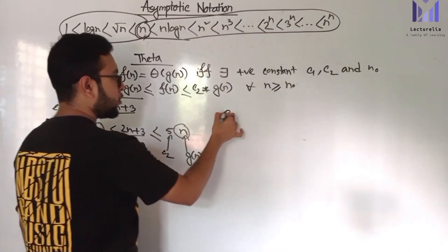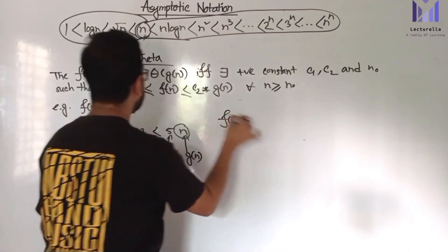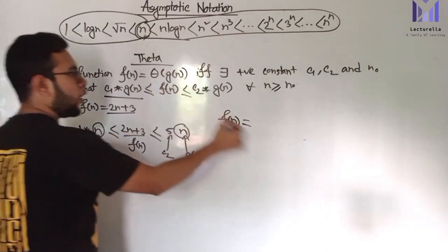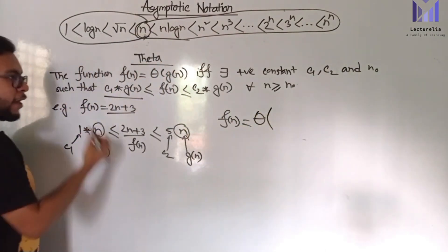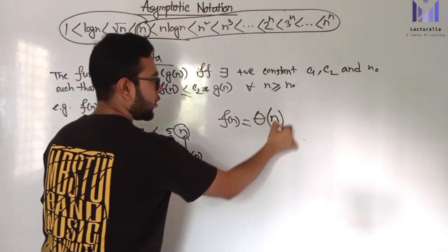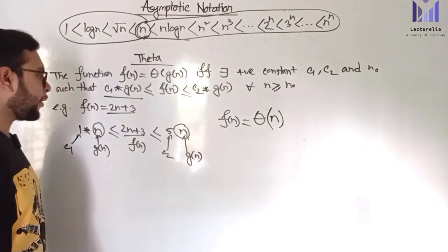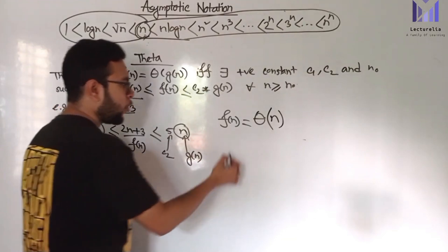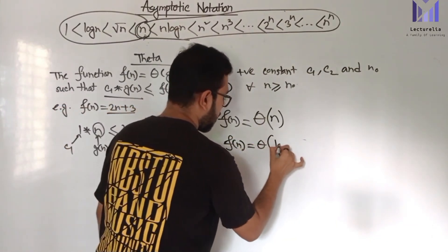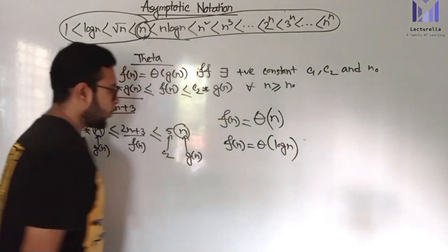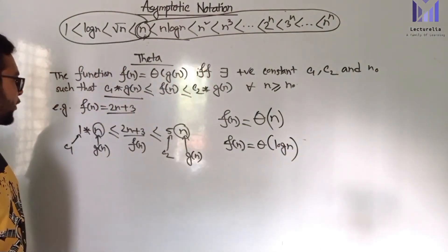Therefore, function of n equals Theta of g(n). The function of n equals Theta of n, or Theta of log n.